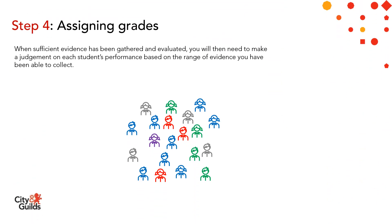Step four in the process is assigning the grades. When sufficient evidence has been gathered and evaluated, you'll need to make a judgement on each student's performance based on the range of evidence collected. In coming to your decision, you as tutors should use your professional judgement to balance the range of evidence available for each student. Centres should aim to use high quality evidence that clearly relates to the specification in terms of both content and assessment. The judgement should be based on actual evidence rather than potential performance. You must do this for all assessment components, including the synoptic assignment, theory exam and any centre-assessed components.